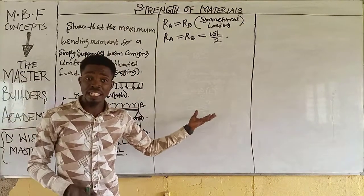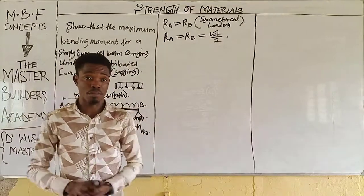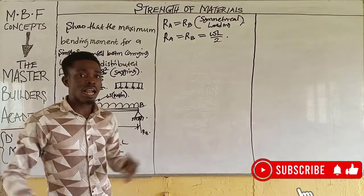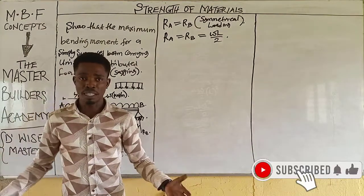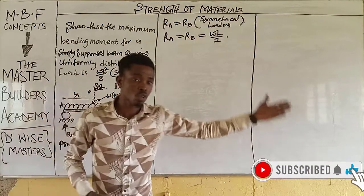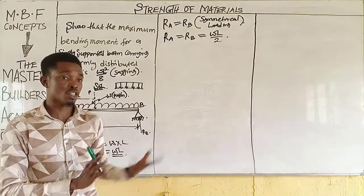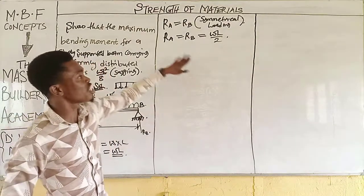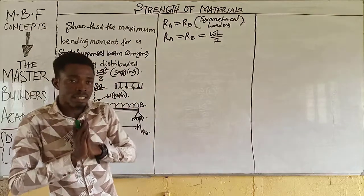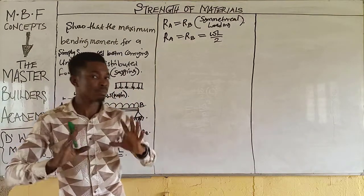There is another way to find this using the equations of static equilibrium: sum of Fx, sum of Fy, and sum of moments — or sum of upward forces equal to sum of downward forces. But this is the short method to obtain the support reaction from a simply supported beam that is symmetrically loaded.